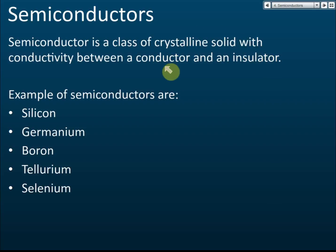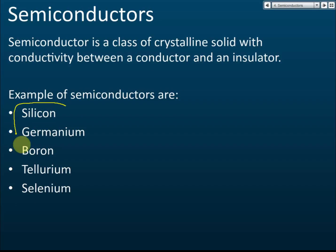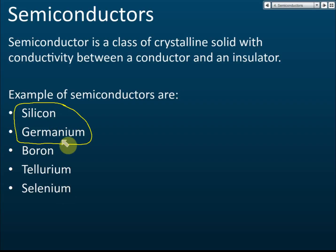Examples of semiconductors are silicon, germanium, boron, tellurium, and selenium. The two most important semiconductors are silicon and germanium. You need to know all of them, but we will only discuss silicon and germanium. Remember this because in the exam they may give you a list and ask which of the following are semiconductors.